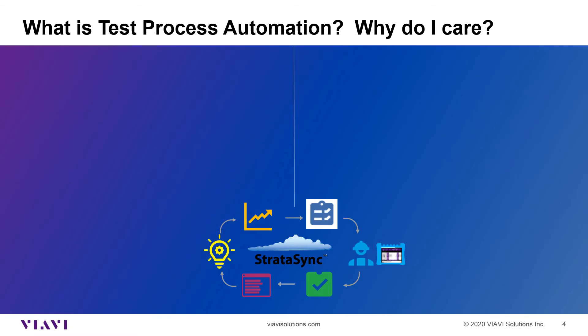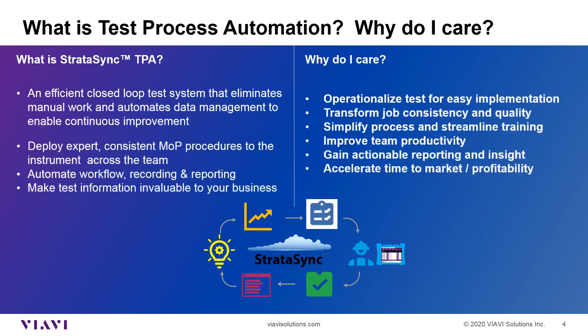So what is test process automation and why do you care? The Stratasync TPA solution is an efficient closed-loop system that's going to eliminate manual work and help you automate data management, so you'll actually be able to utilize the huge investment you're making in test to create KPIs about your network and your team. You can deploy consistent procedures, and when you do, you get consistent results. You can automate the workflow, the recording, and the reporting so nobody has to deal with that very mundane task.